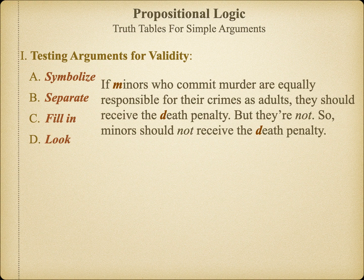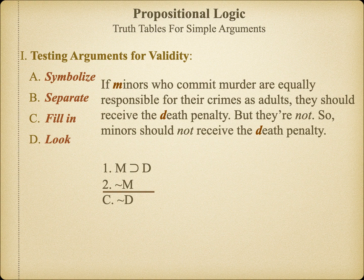This is one of the reasons that symbolic logic is so useful — it helps us to focus on the validity of the argument while not getting distracted by its emotive content. Let's symbolize the argument and put it into standard form. In the first premise, we're saying that M is a sufficient condition for D. In the second premise, we're stating that M is not the case. Finally, we're concluding that it's not the case that D. Having symbolized the argument, it's probably already clear that there's something gone wrong here. But just in case this isn't clear, we can demonstrate this using a truth table.